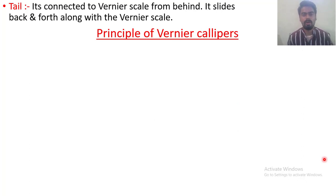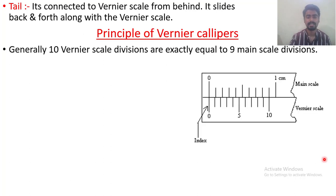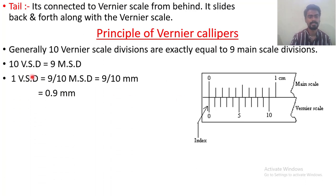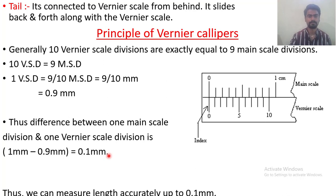Now the main and important topic: the principle of the Vernier Caliper. We have discussed that 10 Vernier scale divisions equal 9 divisions of the main scale. So one Vernier scale division equals 9/10, which is 0.9 mm. The difference between one main scale division and one Vernier scale division is 1 mm minus 0.9 mm = 0.1 mm, and that is the accuracy of the instrument — up to 0.1 mm you can measure an object.